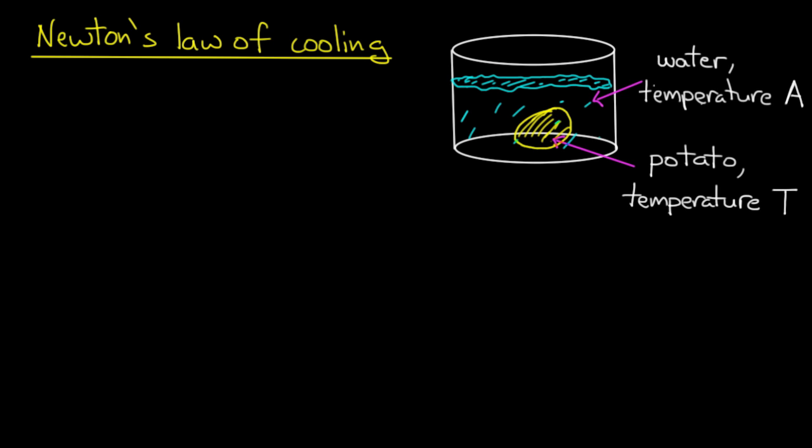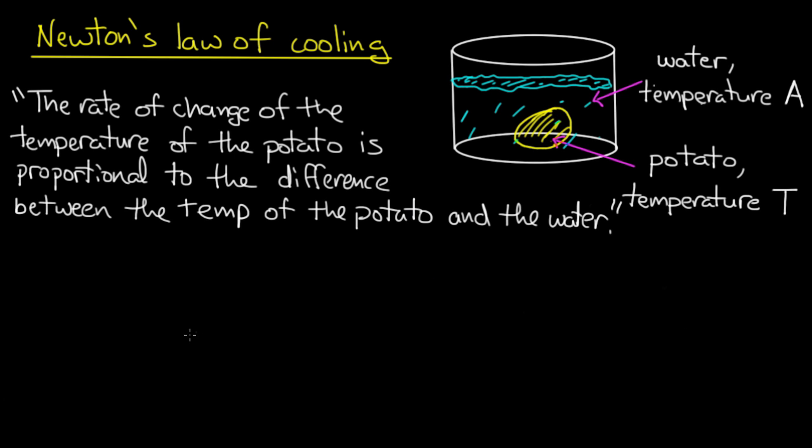Now Newton's Law of Cooling is, in words, the statement that the rate of change of the temperature of the potato is proportional to the difference between the temperature of the potato and the water. Now this is a scientific law. You figure this out by conducting experiments and making observations. Now, our job is to translate this scientific law into an ordinary differential equation, which could serve as a model for this little situation that I've introduced.